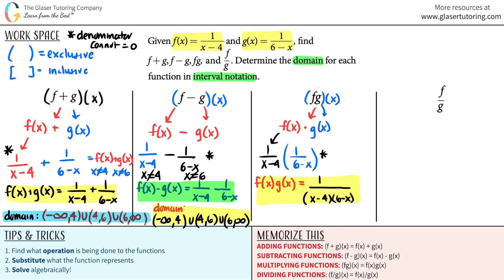Now for the domain, always use the original starred version. The first denominator gives x cannot equal 4, and the second denominator gives x cannot equal 6. So the domain is the same as before: negative infinity to 4, union 4 to 6, union 6 to positive infinity.